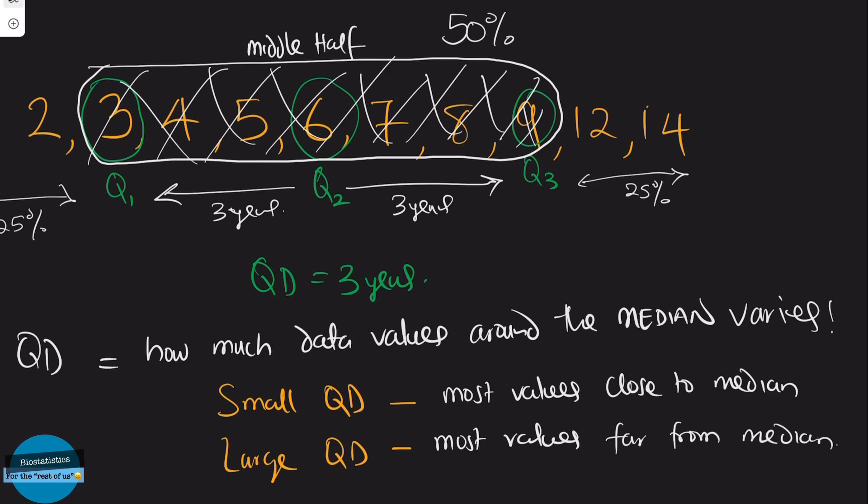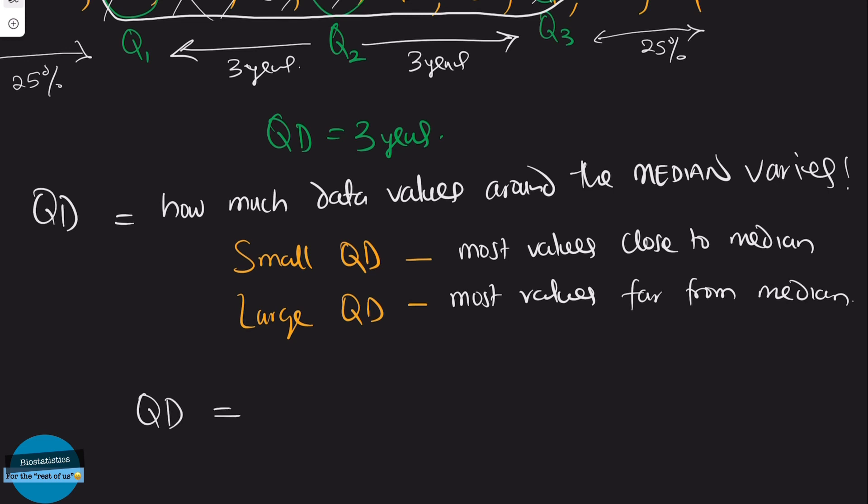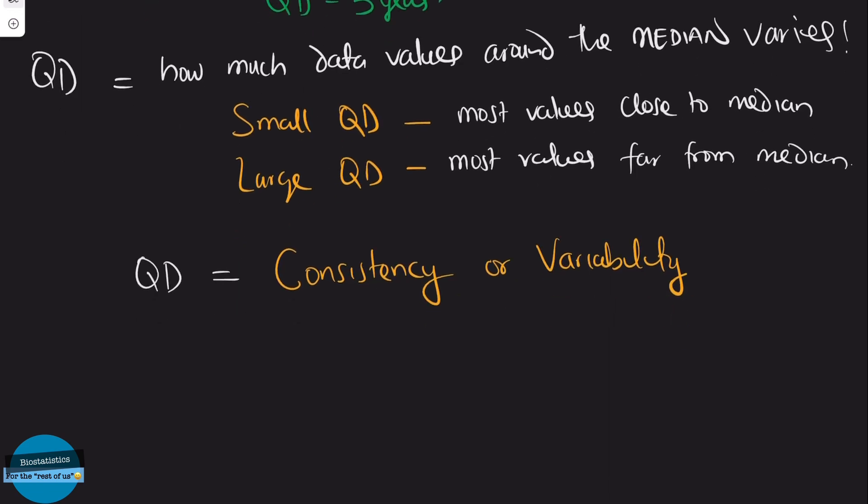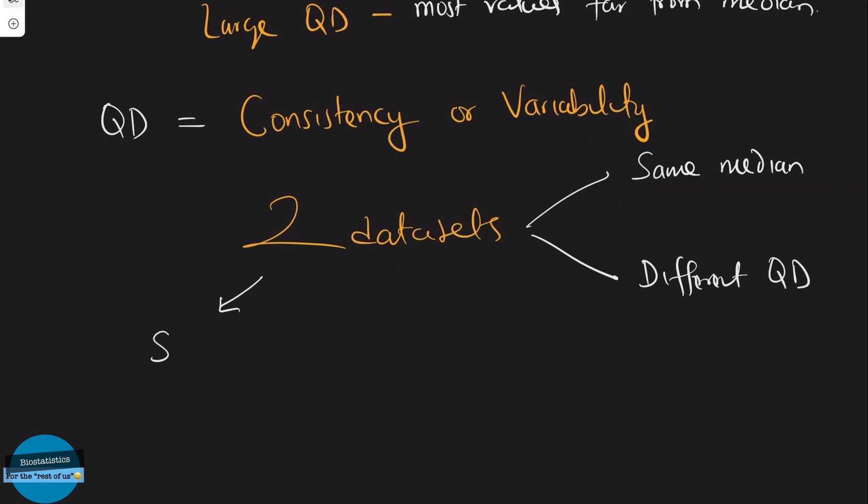So quartile deviation gives us an idea of how consistent or how variable the data values are with respect to the median. So if we compare two data sets with the same median or different quartile deviations, we can say that one with a smaller quartile deviation has less variation and more consistency than the one with a larger quartile deviation. And don't forget this is with respect to the median.